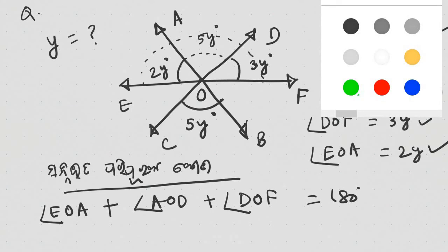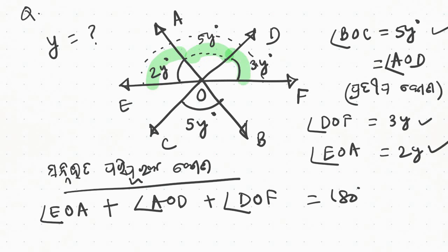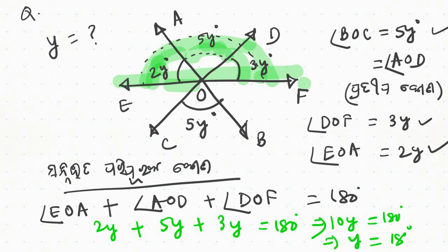The angles on the straight line are 180 degrees. So angle AOD plus angle DOF equals 180 degrees. We can write: 2y plus 5y plus 3y equals 180 degrees. So angle EOA which is 2y, plus angle DOF which is 3y, then 10y equals 180 degrees. So y equals 18 degrees. Then y equals 18 degrees. You can see the answer.